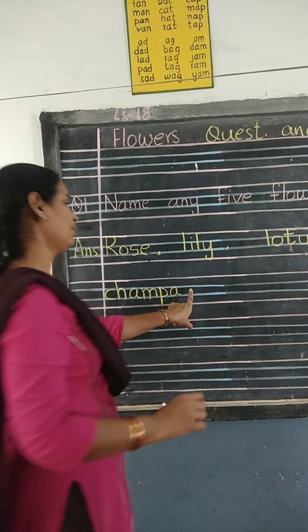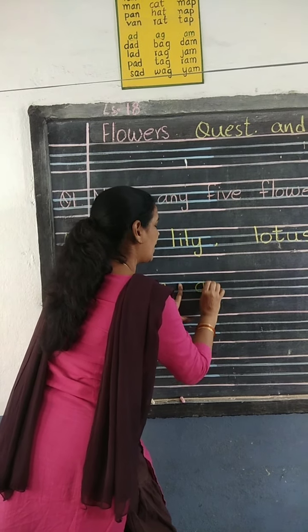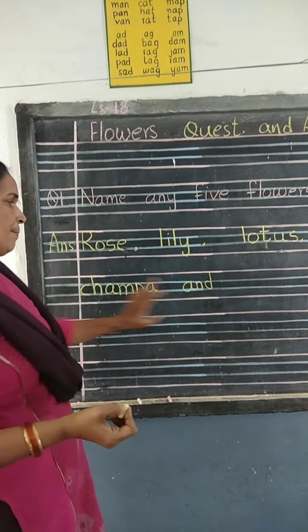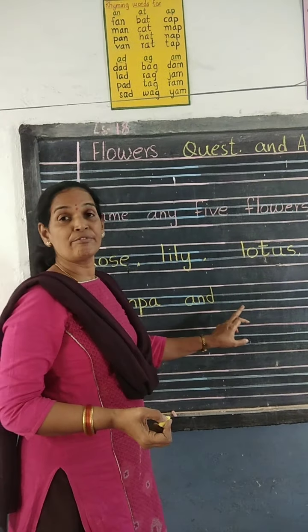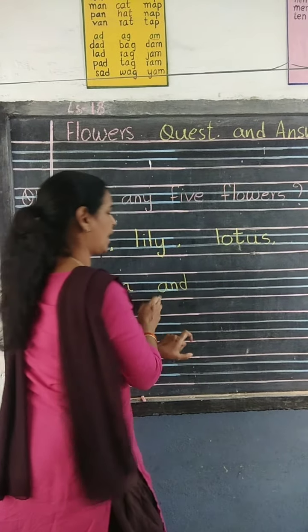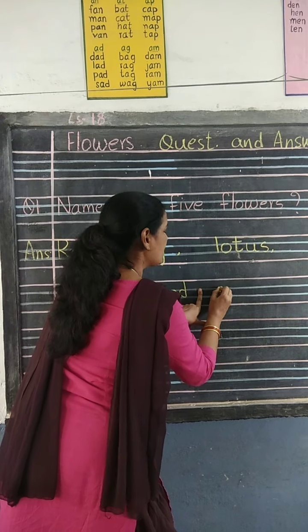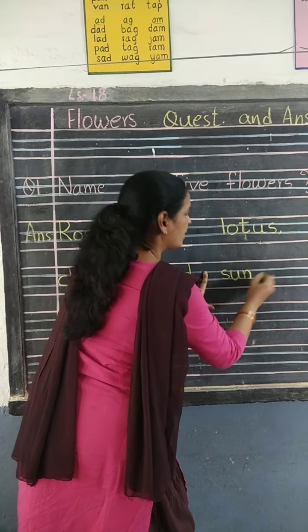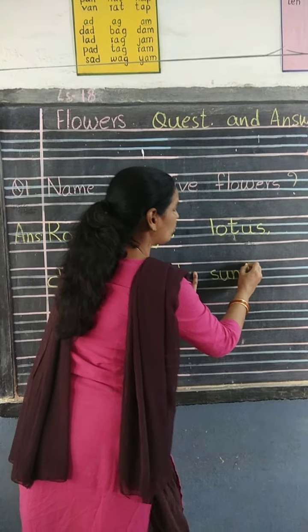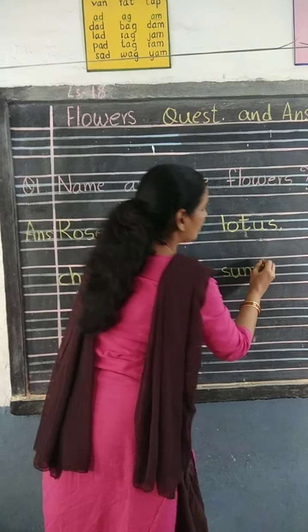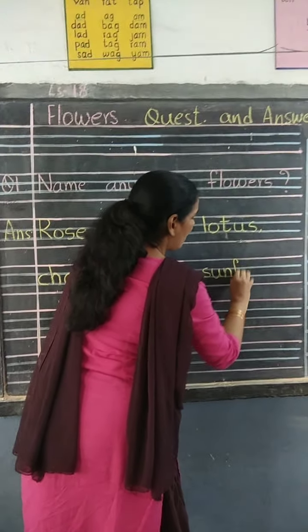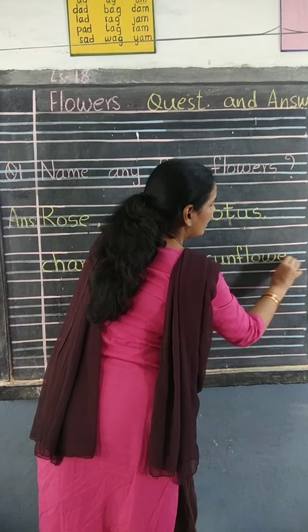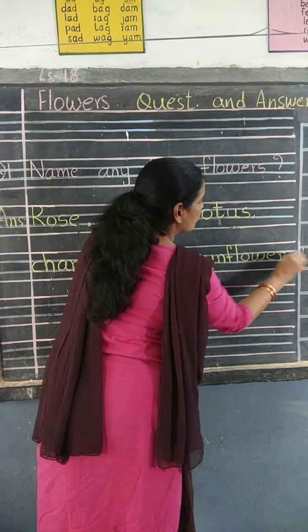Now no comma, children — finger space. Now we'll write 'and' — A-N-D — and. Champa, and we'll write sunflower. Spell it — finger space. After 'and,' finger space, small S in two blue lines. S-U-N — sun. F-L-O-W-E-R — flower. Sunflower. Finish. S-U-N, F-L-O-W-E-R — sunflower. Okay. We'll finish one time.